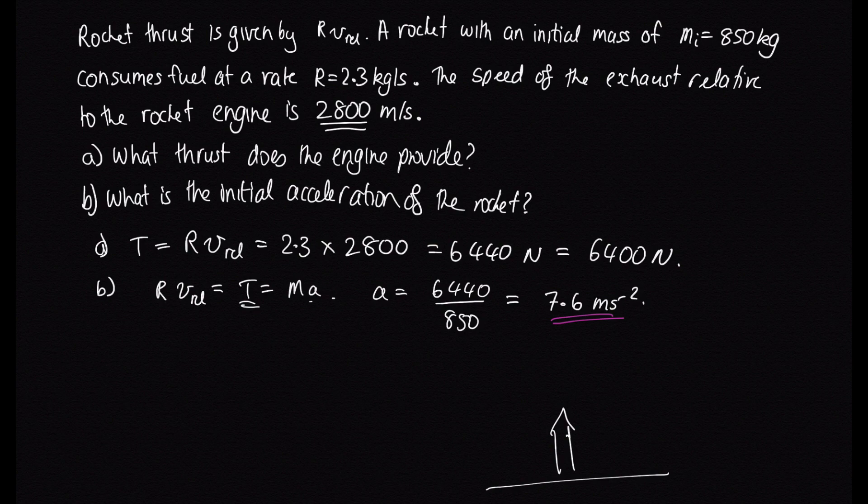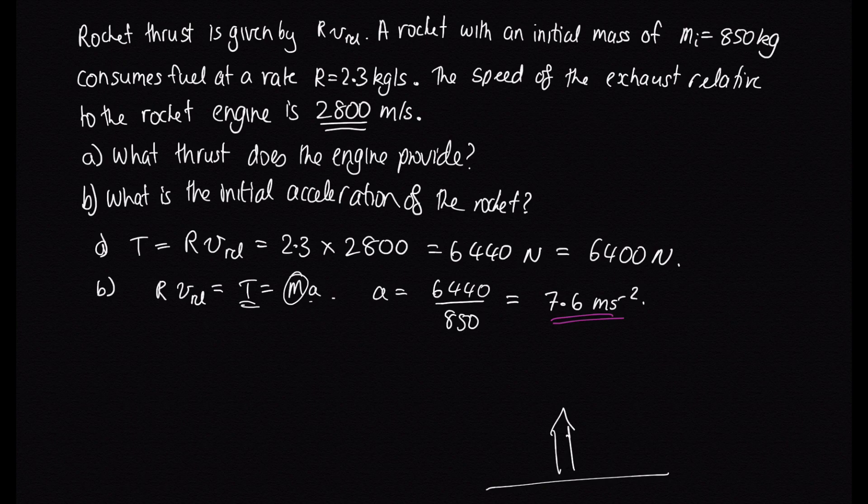So the rocket would just sit on the launch pad slowly burning through its fuel. I guess at some point this mass will have decreased enough that if it continues burning it at the same rate, then it will manage to take off. But initially this isn't enough to launch it off a launch pad on Earth.